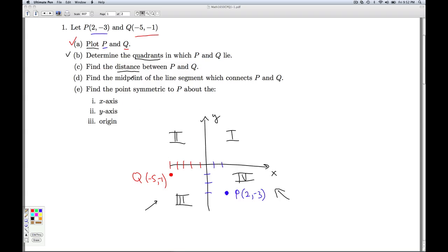Next, we're asked to find the distance between P and Q. So by the distance between P and Q, we mean we want the length of the straight line segment that connects P with Q. We have the so-called distance formula.